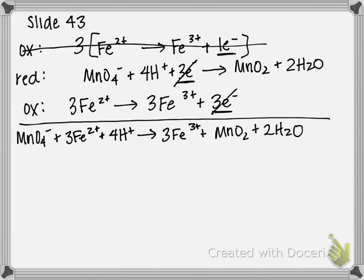But because this is a basic solution, what we have to do is to neutralize or balance out our H plus ions with hydroxide or OH minus ions. We have four hydrogens on this side. In order to neutralize it, we're going to add 4 OH minus. Whatever we do to the reactant side, we do to the product side as well. So I'm going to add 4 OH minus to the product side.